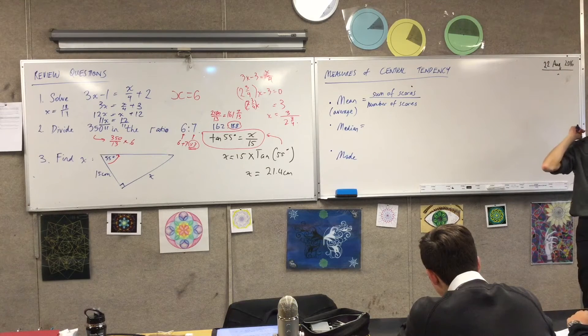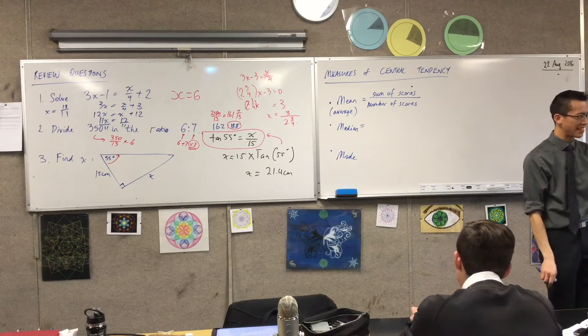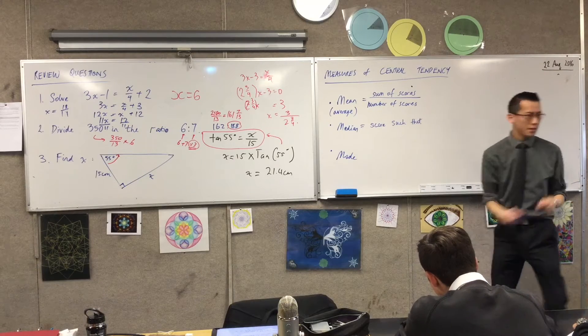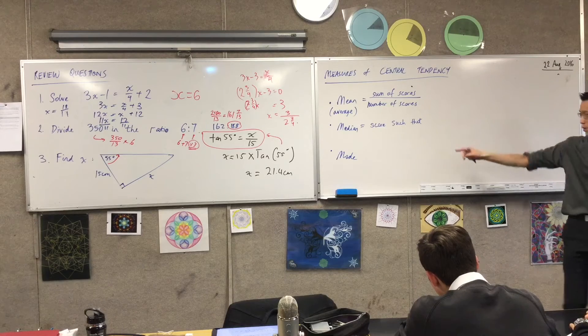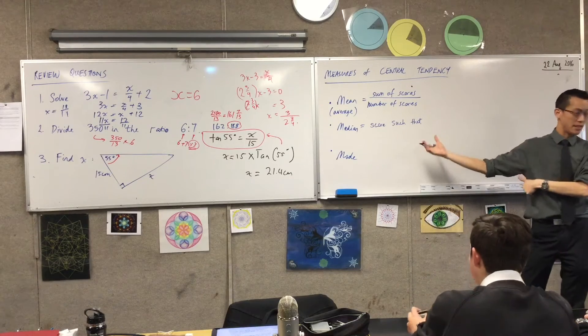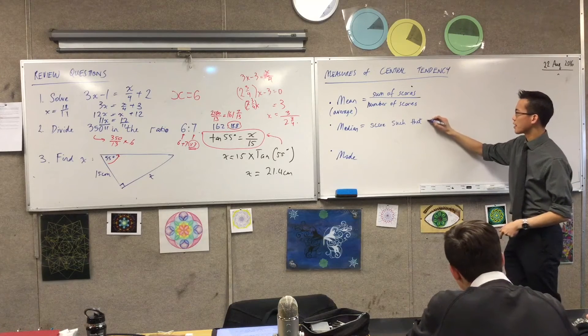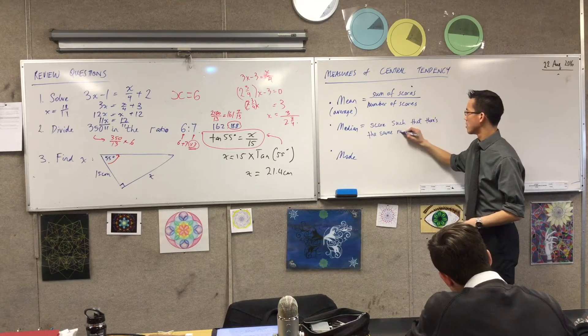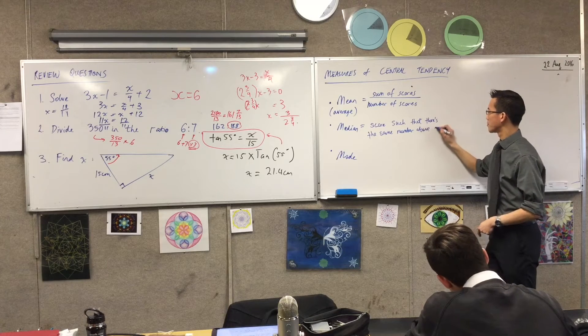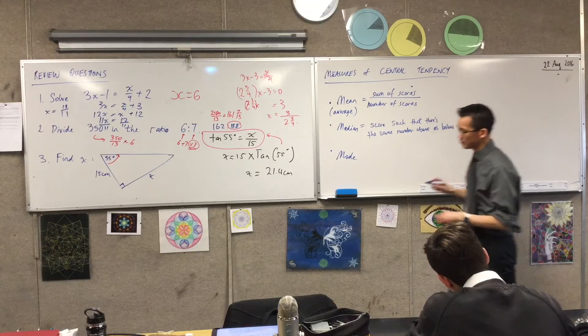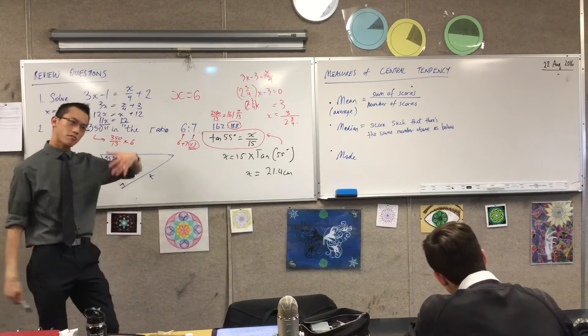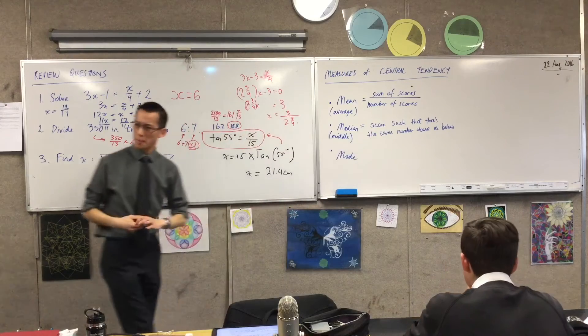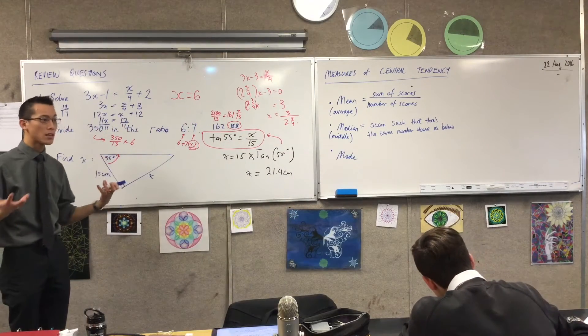As the rhyme says, the median is the middle score. Now, I actually want to give you a slightly better definition for that. It's a score such that there's the same number of scores above you and the same number of scores below you. Let me write that, and then I'll unpack why I think this is a better definition. It's a score such that there's the same number above as below.